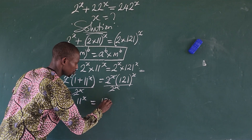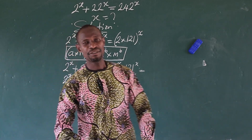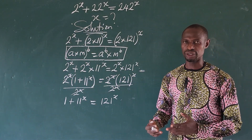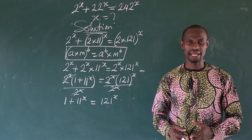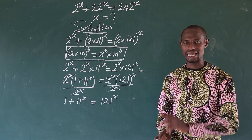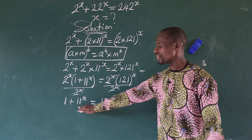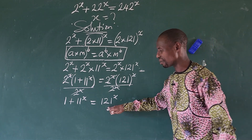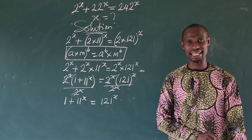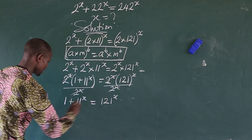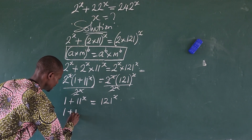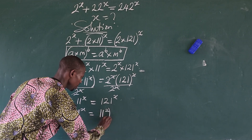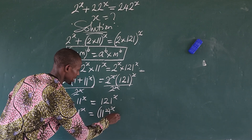If we look carefully, we discover that 121 is a perfect square: it is 11 times 11. And we already have 11 as the base number on the left side. So we can rewrite the equation as 1 + 11 to the power of x equals 11 to the power of 2x.